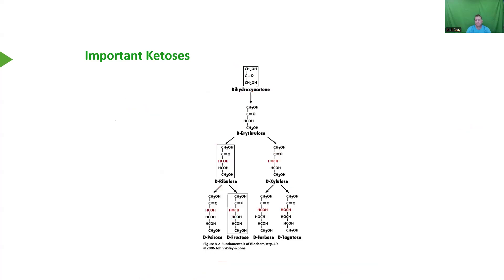The next group of molecules we're going to talk about are ketoses. There are a total of three ketoses I want you to know the structures of: dihydroxyacetone, ribulose, and fructose. Fructose is arguably simple because it's basically the structure of glucose — the only difference is a ketone functional group instead of an aldehyde. So carbon number two is your carbonyl carbon. All of these have a ketone at carbon two, with OH groups either on the right or left-hand side of the structure.